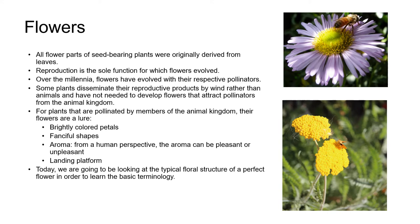All flower parts of seed-bearing plants were originally derived from leaves, and over millions of years flowers have evolved with their respective pollinators. The result is the amazing variety of shape, color, fragrance, and smell that we see in flowering plants today. Reproduction is the sole function for which flowers evolved. Some plants disseminate their pollen by wind and don't have any need for showy flowers. The flowers of these plants tend to be fairly muted in color — pale tan or shades of brown — and while these flowers aren't showy from a human perspective, many still have an elegant, understated beauty and are worthy of a place in our landscapes.